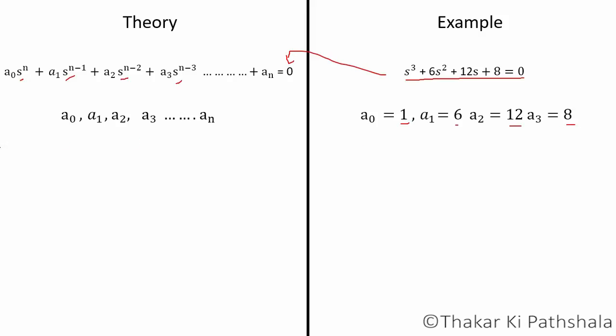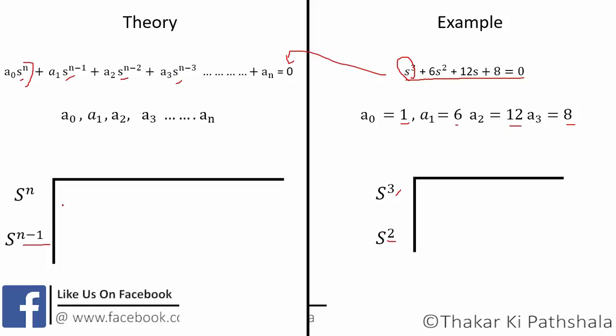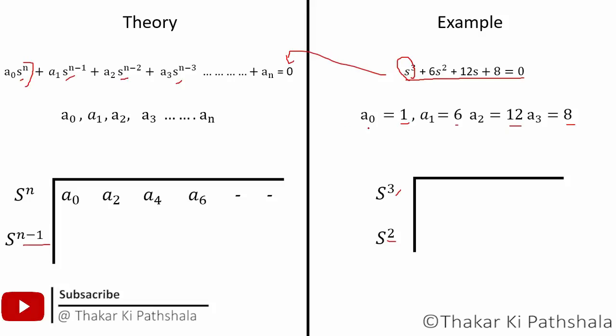After finding out the values of a₀, a₁, a₂ and so on, we will move to the next step which is to write them into array form to solve the equation. There is one simple trick: just draw two lines like this, then start with the highest order of s. In theory we are taking it n, and for this example it is 3 because here in the example it is the highest order of s. Now decrease it by 1, you will get s^(n-1), here s², and so on. We will write them as we proceed.